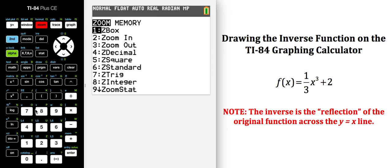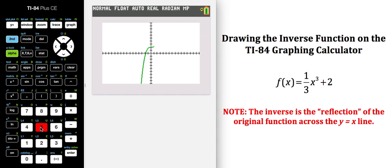So again I'm going to zoom square. We have the original function now in green and we've got the y equals x line on the calculator.